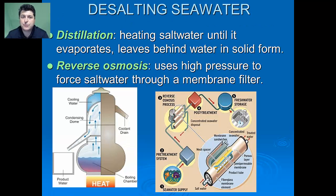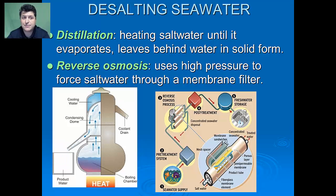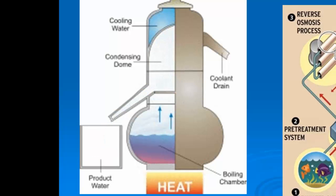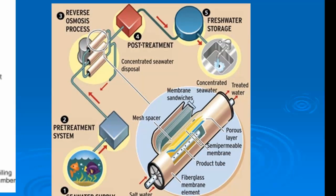So far, none of our solutions have been perfect. Let's look at desalination. Desalinization is taking the salt out of seawater, and there are two basic methods: distillation and reverse osmosis. With distillation, you heat seawater, allowing the water to evaporate and leaving the salt behind in solid form; the water vapor is then condensed and collected for drinking or sanitation. With reverse osmosis, you use high pressure to force seawater through a membrane filter, so the salt stays behind and the fresh water is pushed through.